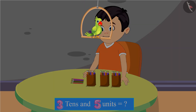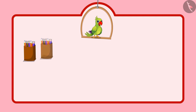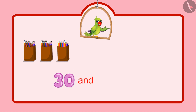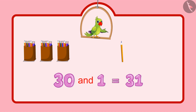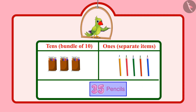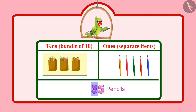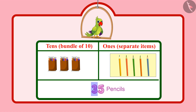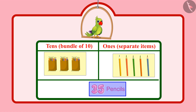Children, can you tell me how many pencils Chotu has now? Come on, let us see. Chotu had 30 pencils, followed by 31, 32, 33, 34, 35 — so Chotu has 35 pencils in total. In 35 pencils, 3 means 3 tenths and 5 means 5 units, which means a total of 35 pencils.